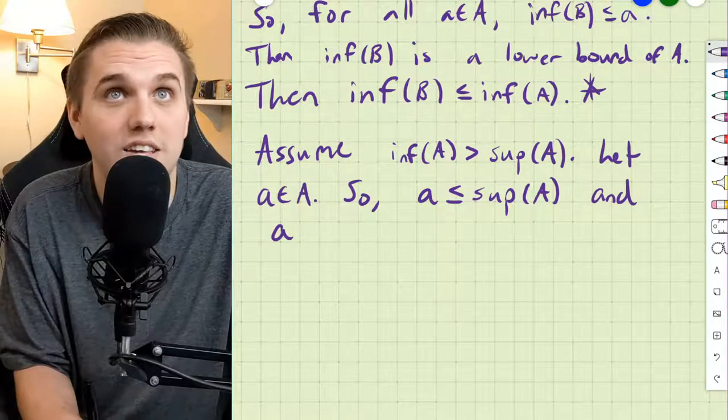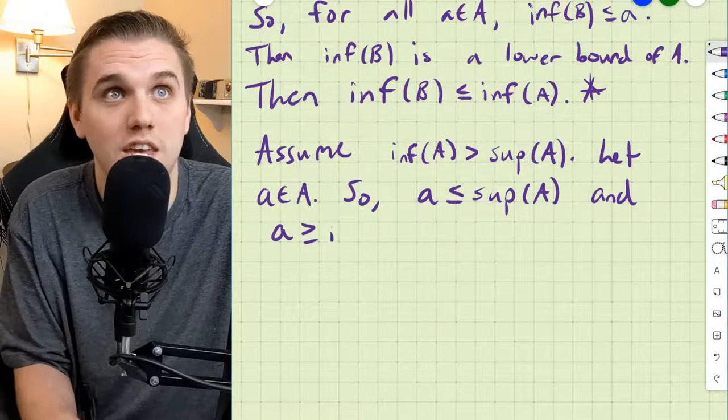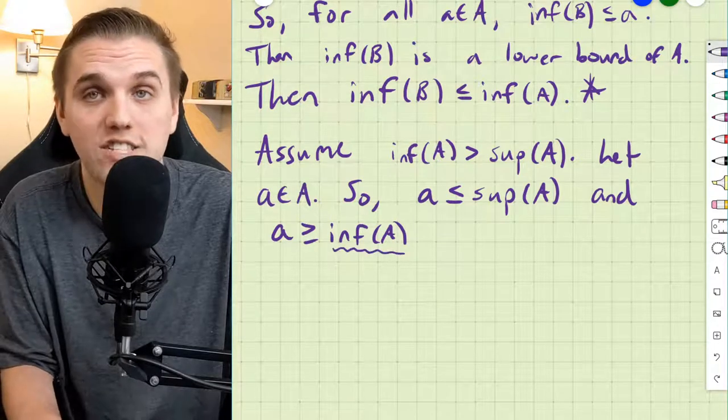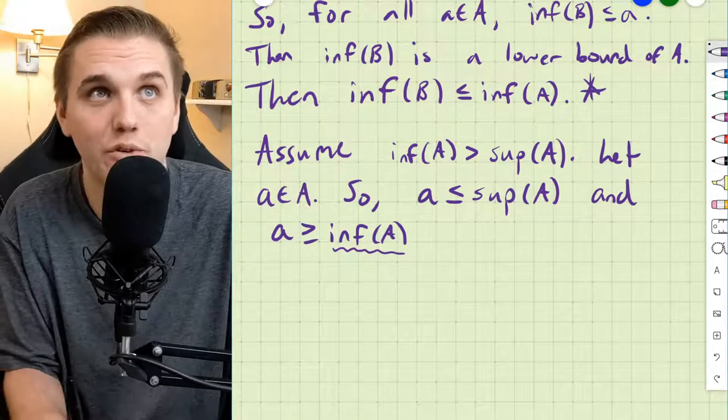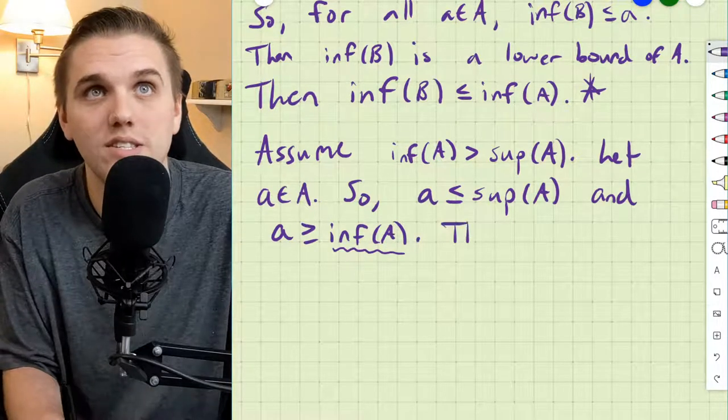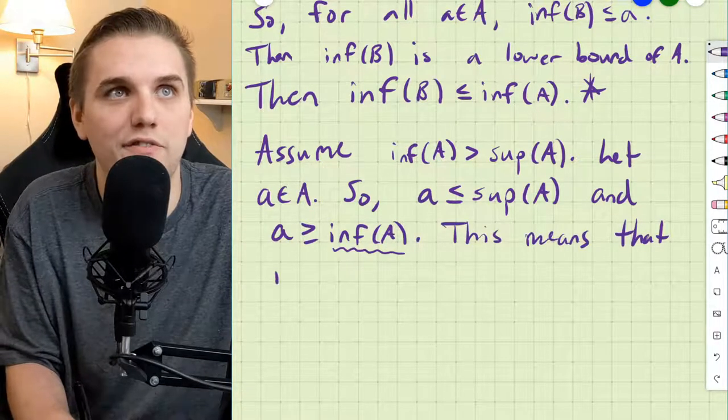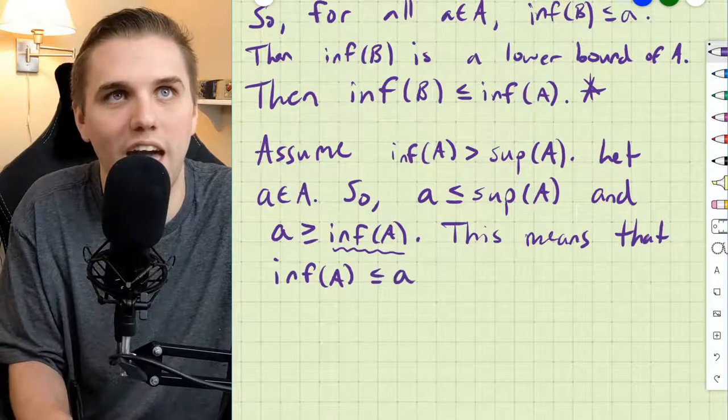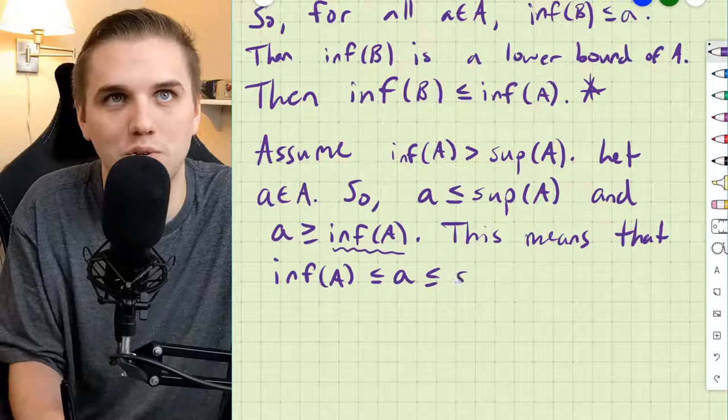And, A is greater than or equal to the infimum of A. Why is that? Well, the infimum of A is a lower bound, meaning that it's less than or equal to every element in A. This means that the infimum of A is less than or equal to A, which is also less than or equal to the supremum of A.